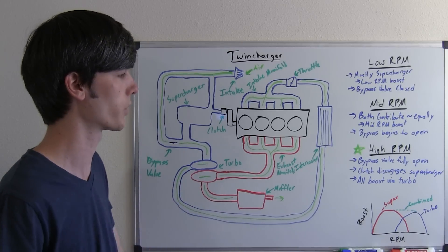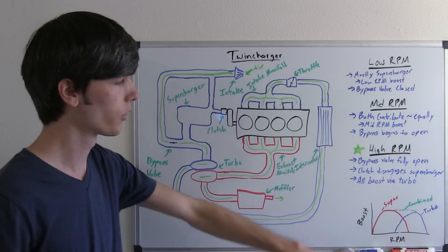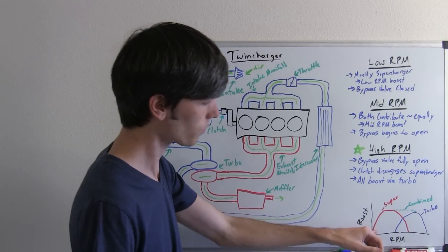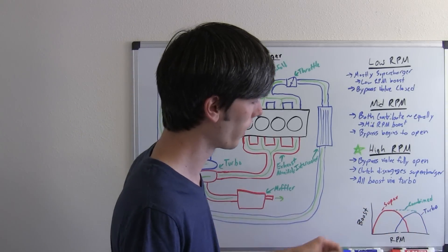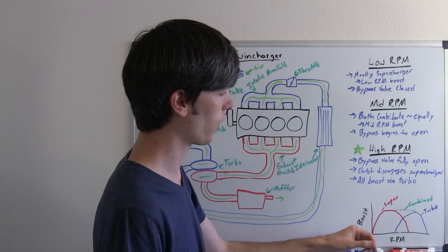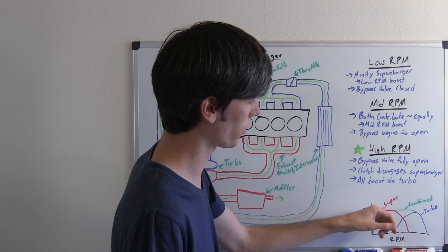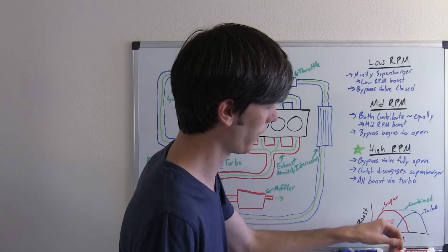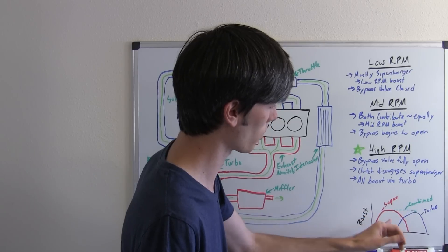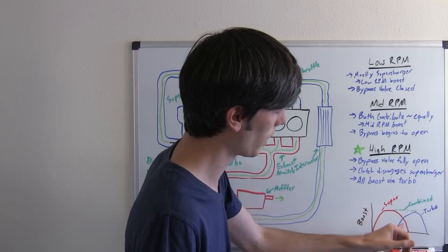So what is this going to look like overall? Well basically here's our curve of boost and our RPM. So as the engine begins to spin up, the supercharger takes over and provides this boost here. Then the supercharger starts doing less of the work as the bypass valve opens, but combined with the turbocharger you still have that high peak boost.